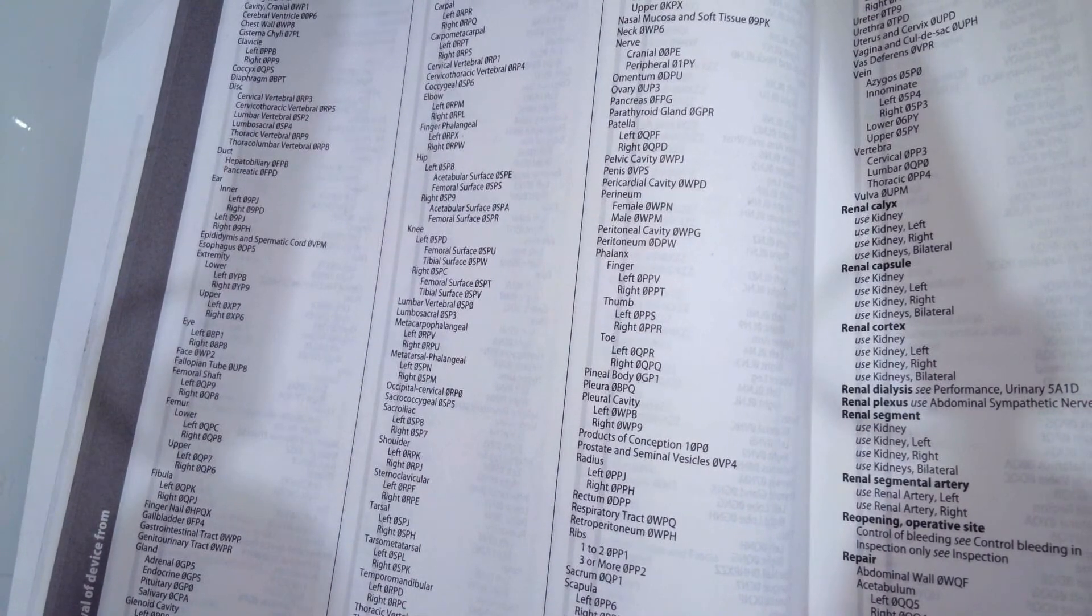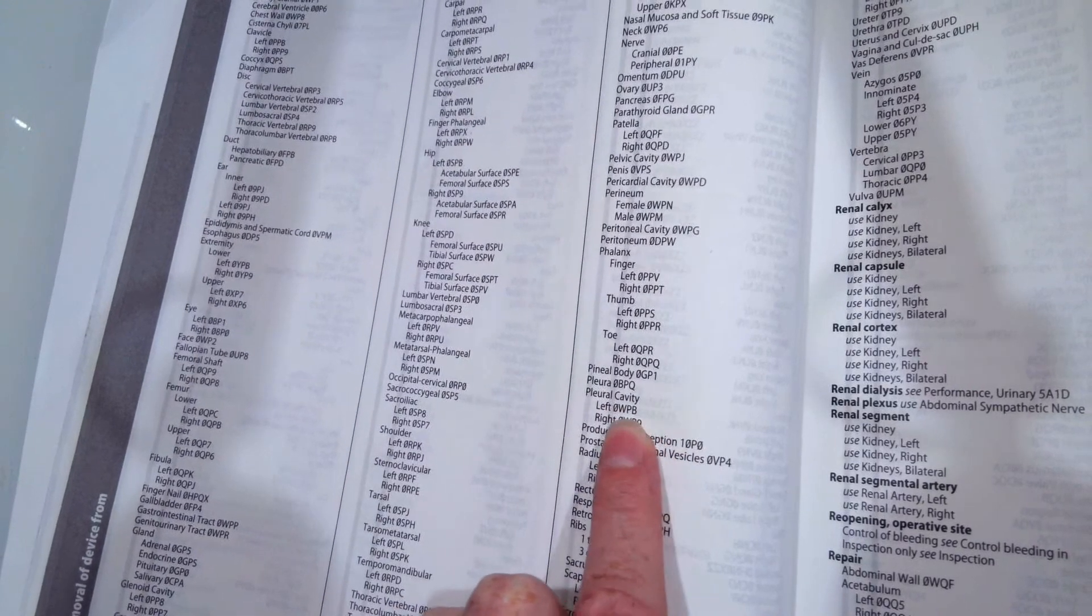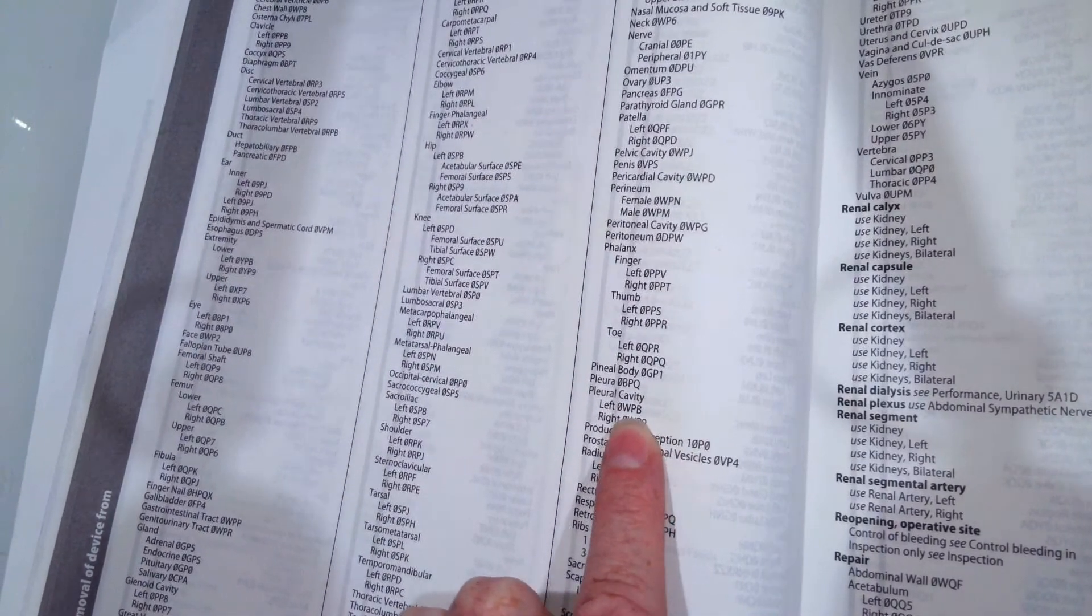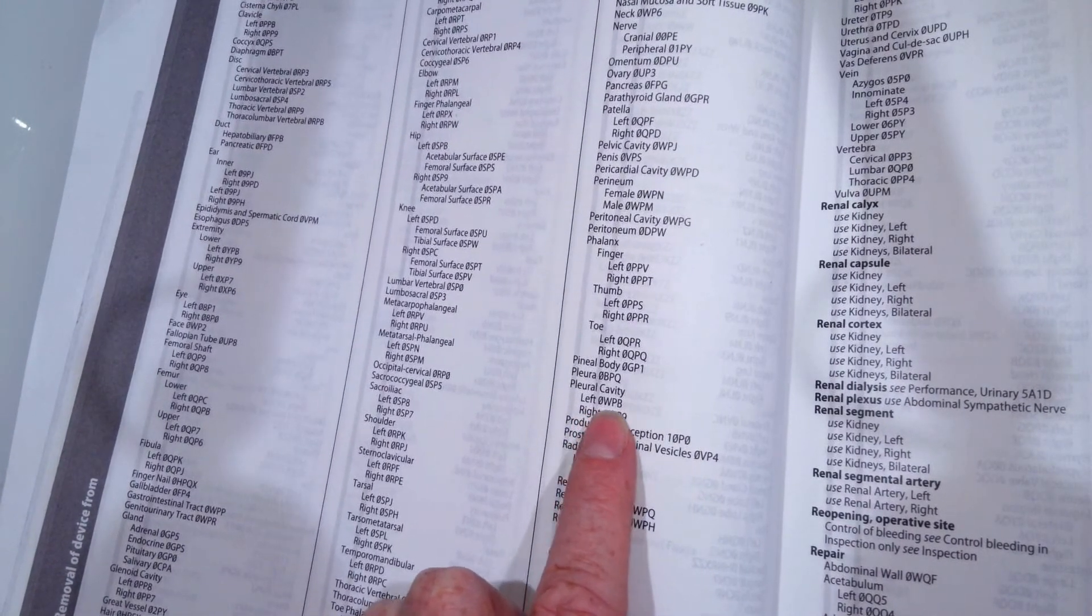A chest tube is placed in the pleural cavity. Ours was the left pleural cavity. So we would do 0-W-P-B.